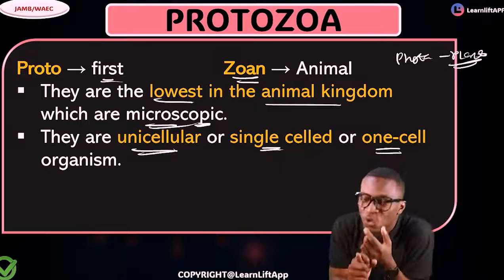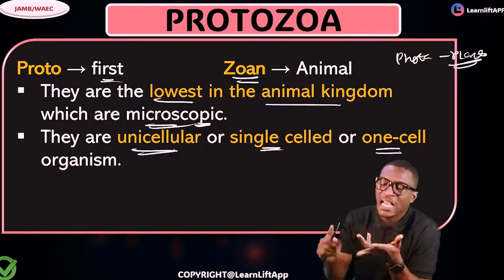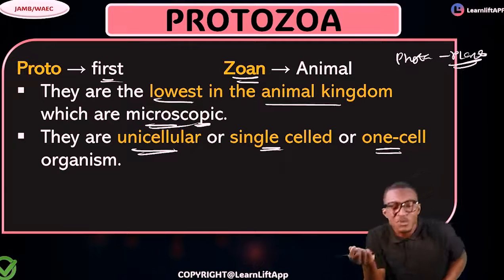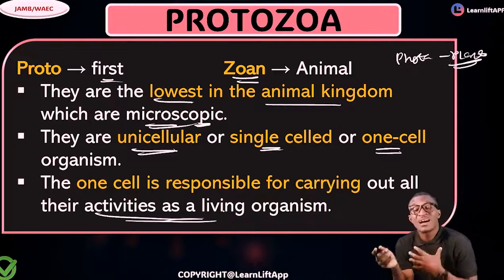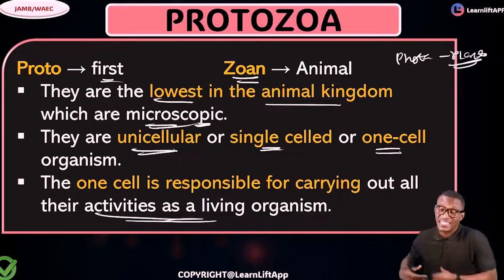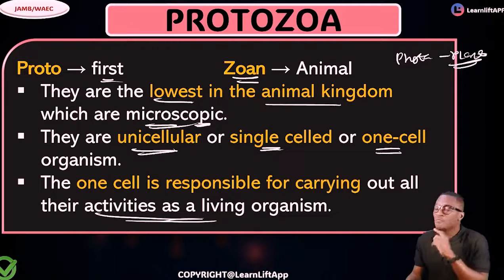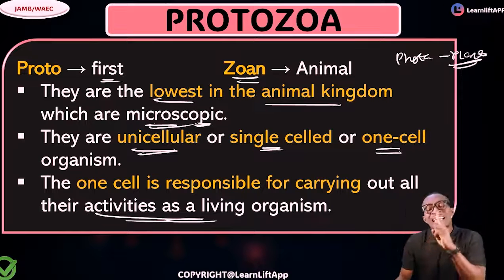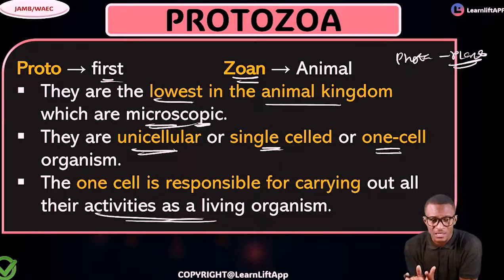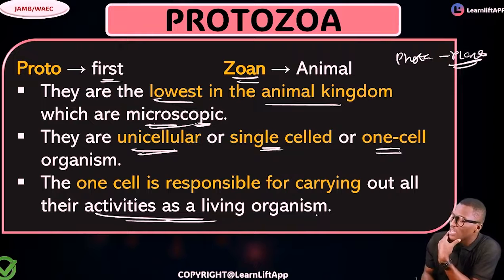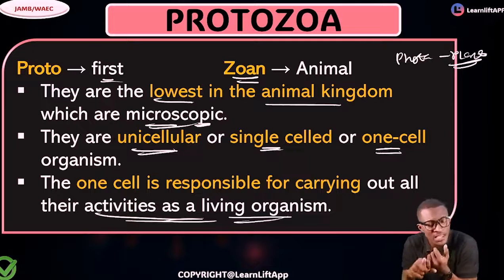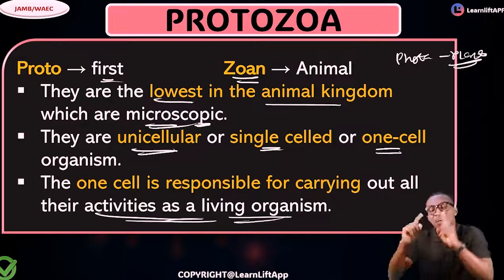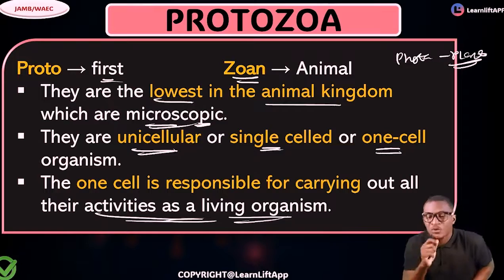They are the lowest in the animal kingdom, they are microscopic, and they are unicellular — the same as single cell or one cell. That one cell carries out all the activities of a living organism. You have a liver, a respiratory system, a digestive system — but for protozoa, all these processes are carried out by that single cell. Give me three things about protozoa: number one, they are the lowest in the animal kingdom; number two, they are unicellular; and number three, that one cell is responsible for carrying out all activities as living organisms.